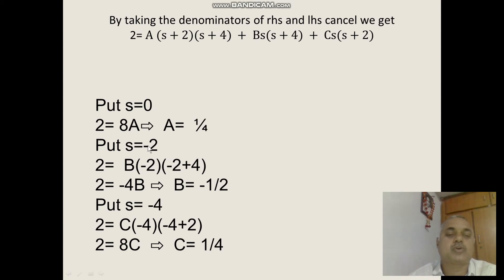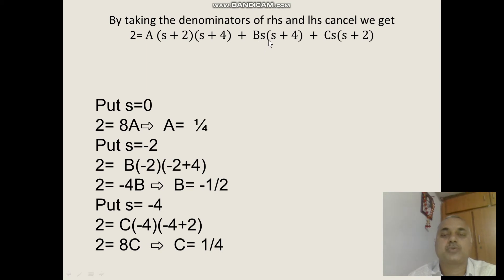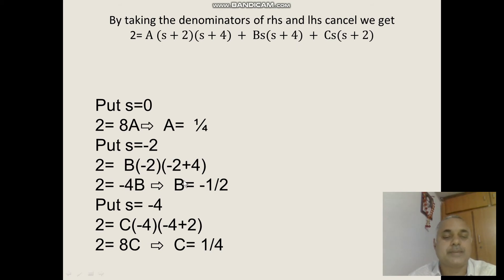Put s equal to minus 2. The A term vanishes. So 2 is equal to B into minus 2 into minus 2 plus 4, that is B into minus 2 into 2. So minus 4B is equal to 2, and B is equal to 2 by minus 4, that is equal to minus 1 by 2.